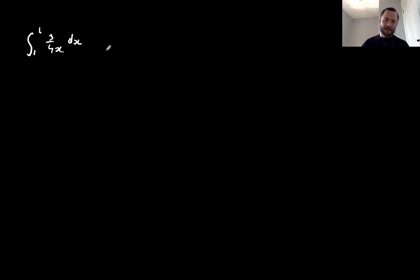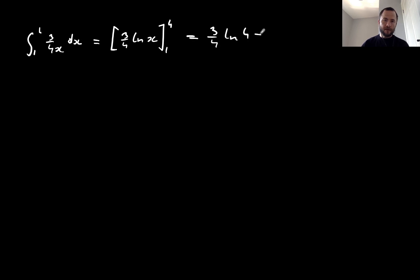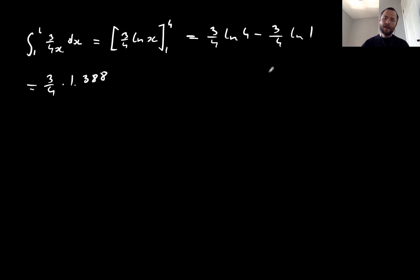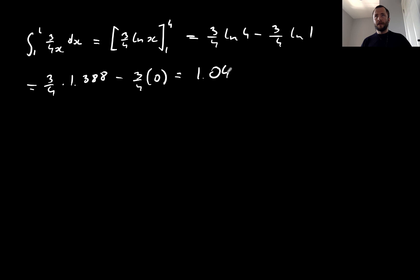One more example using the natural log: the integral between 1 and 4 of (3/4x) dx. I can rewrite this as three quarters times 1/x, and taking the integral gives the natural log. The value of this definite integral is (3/4)ln(4) minus (3/4)ln(1). Since ln(4) ≈ 1.388 and ln(1) = 0, the result is (3/4)(1.388) minus 0, which equals approximately 1.04.